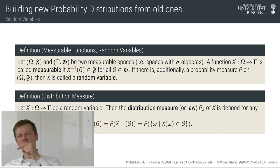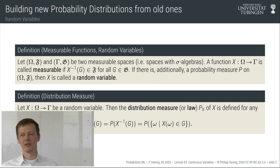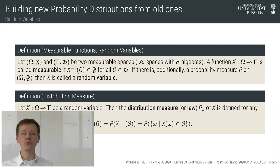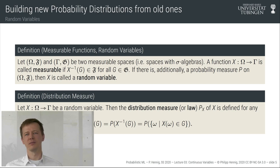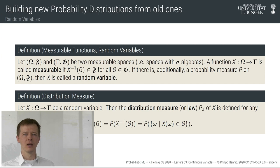If there is a probability on the original space, we want to use measurable functions to construct a new probability on the derived space — called the distribution measure or the law of the random variable x. This distribution measure is defined in exactly the way you would imagine. I'll state the definition and then go back to the coin example to check whether it makes sense.